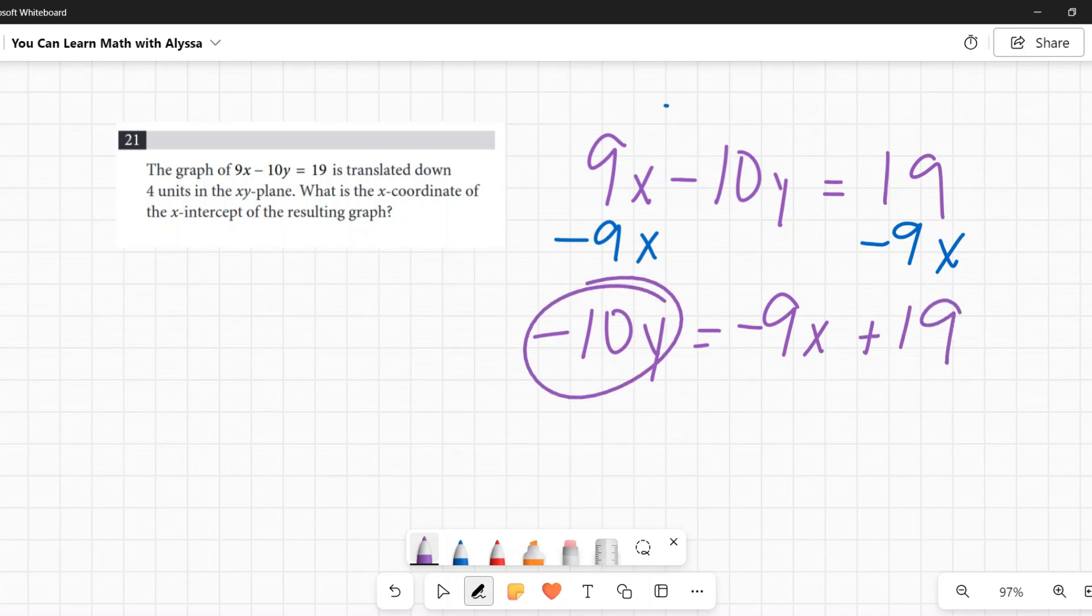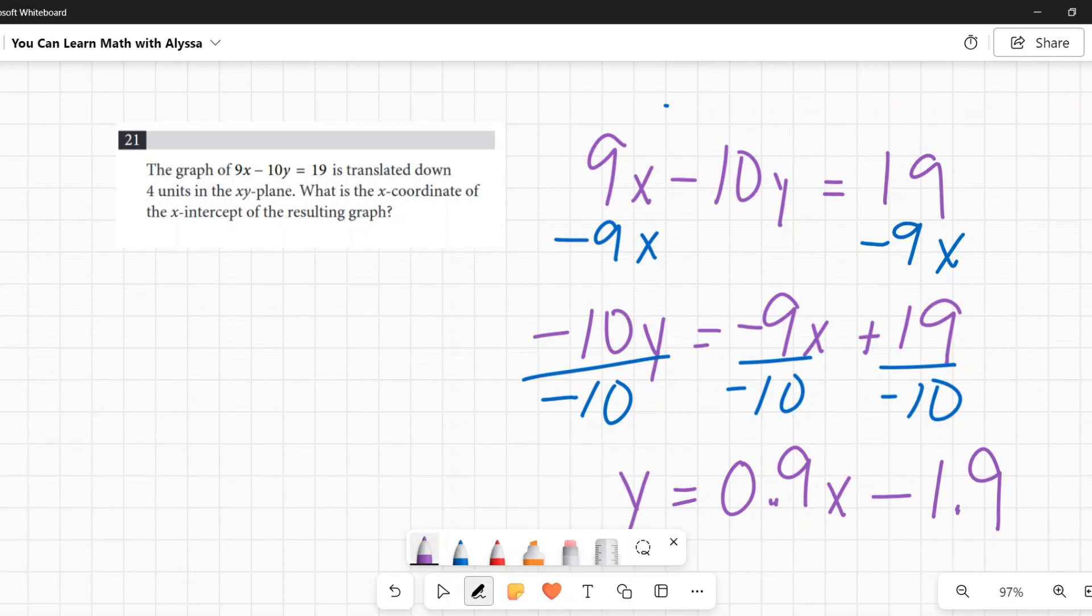Now y is being multiplied by negative 10, so I'm going to divide by negative 10. I have to divide everything by negative 10. So I'm going to get just a y on the left, and on the right, negative 9 over negative 10. I'm going to put this into decimal form. That is 9 tenths, but I'm going to write it as 0.9x. Then I have 19 over negative 10, and that is negative 19 tenths or negative 1.9.